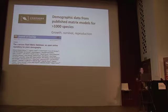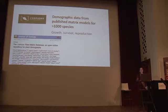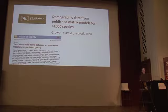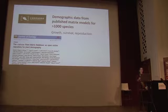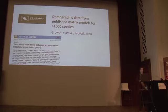The third project is Compadre, the Plant Matrix Database. This is where we collect data from the literature on population models published since about the 1950s, recording growth, survival, and reproduction parameters for over a thousand species of plants. We've made these data open and freely available online. Jonathan Silvertown and Miguel Franco worked on a predecessor of this, and Rob Salguero-Gomez is the current lead, doing a great job getting a large group of people together to contribute to this digitization process.